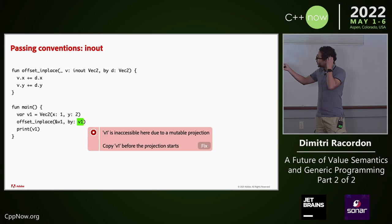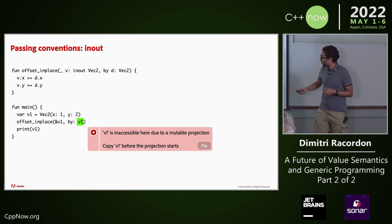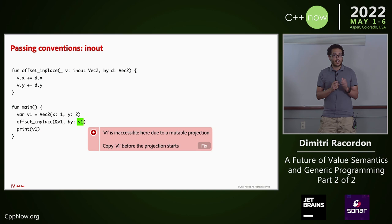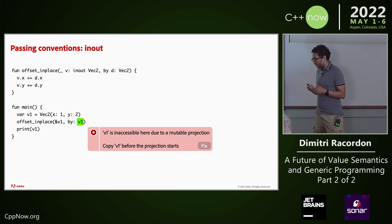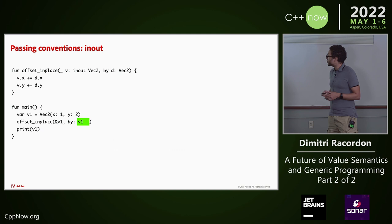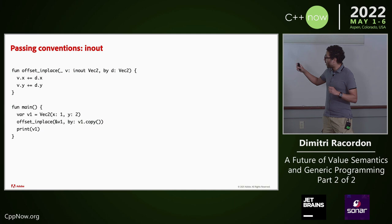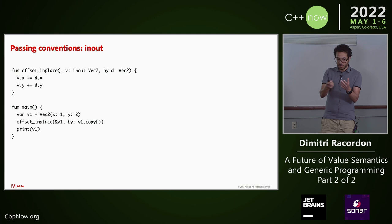I have this ampersand to mark the notation — it's not the address-of operator, it's just a marker to say that argument might be mutated. Because the contract says there cannot be another reference to that thing mutable or otherwise, this v1 here is a mistake. That call would be fine in Swift because Swift would do an implicit copy, but copies need to be explicit in VAL. The compiler is telling me to do that — here is how I fix the example. Now it's fine because I copy v1 before the call starts.